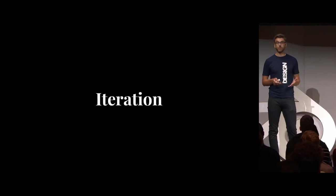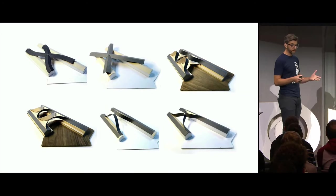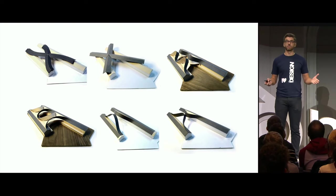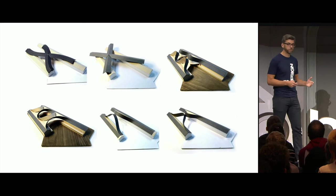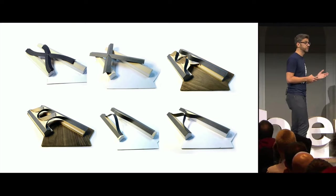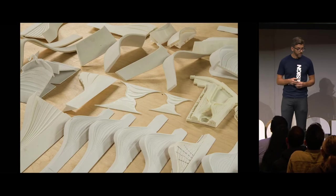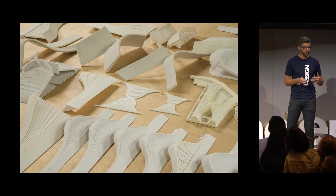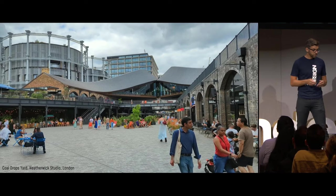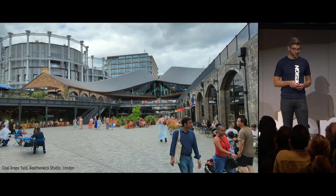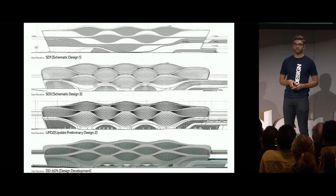Of course, they had to iterate a lot to get to that concept. Here are some of the models they did - it's quite interesting because the design solutions to achieve that dome concept could be very different. These all satisfy the design criteria, but they chose one, and I think they chose the right one. The iterative process doesn't stop - it continues throughout the design process until we get to the final solution. Make sure you check out Coal Drops Yard if you go to London.